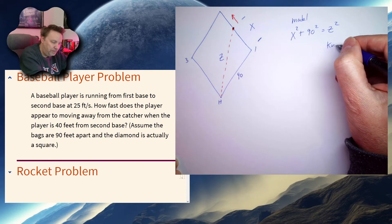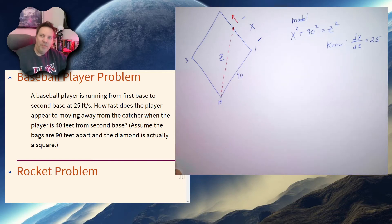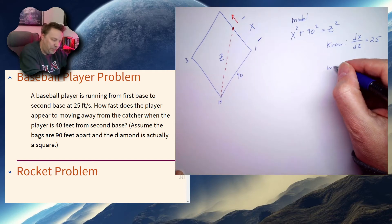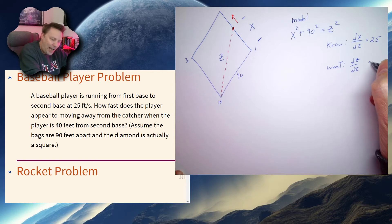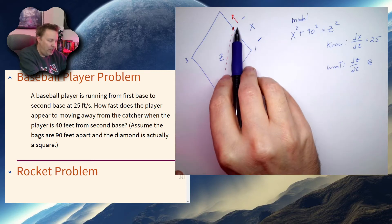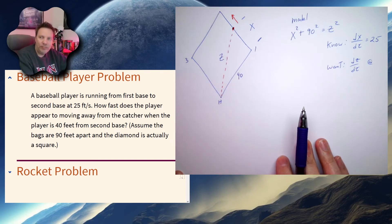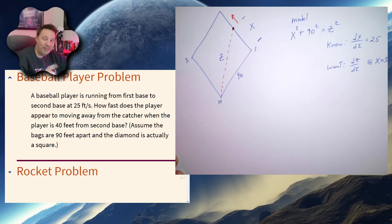And what do we know? Well, we know that dx dt, that's 25 because the person is running at 25 feet per second. What do we want in this problem? We want to know what dz dt is. Well, is it x equals 40 or x equals 50? The 40 is referencing the player and second. So we want this when x is equal to 50, not 40. Just be really careful about that little subtlety there.